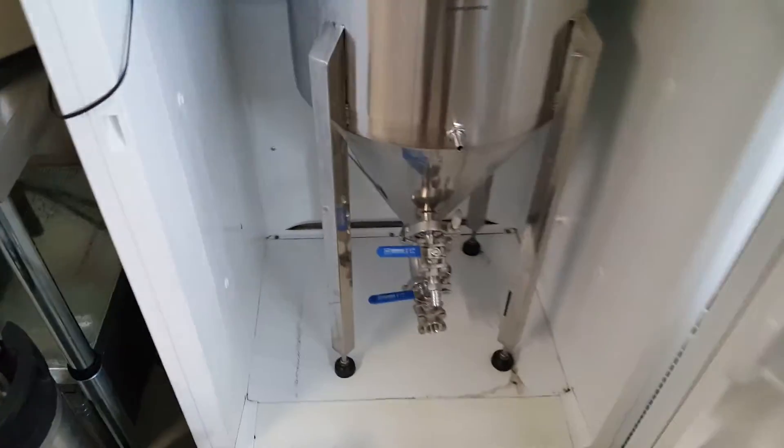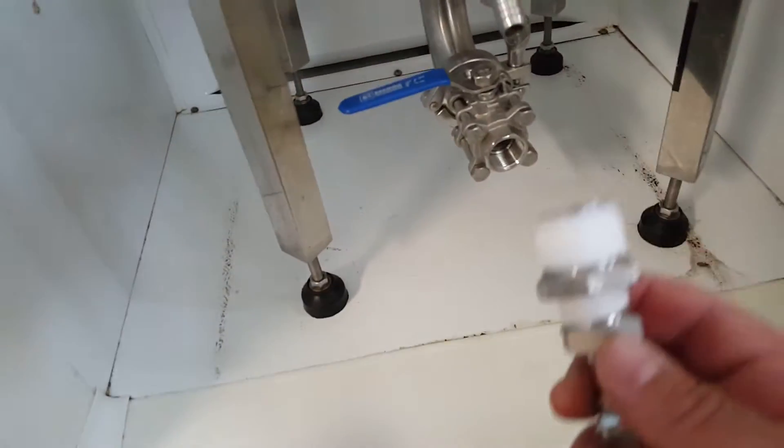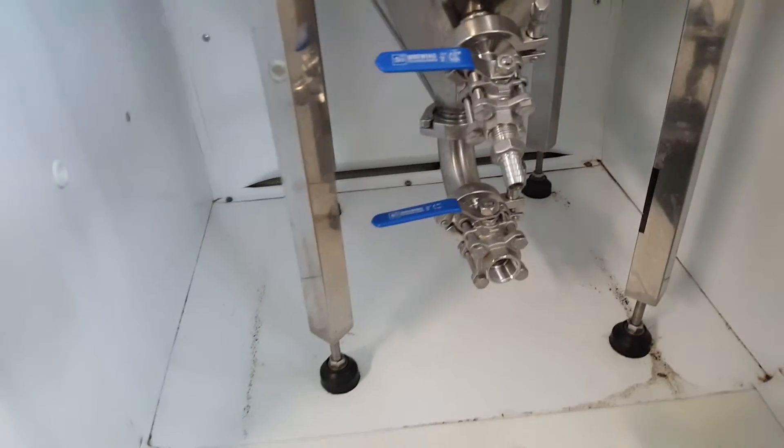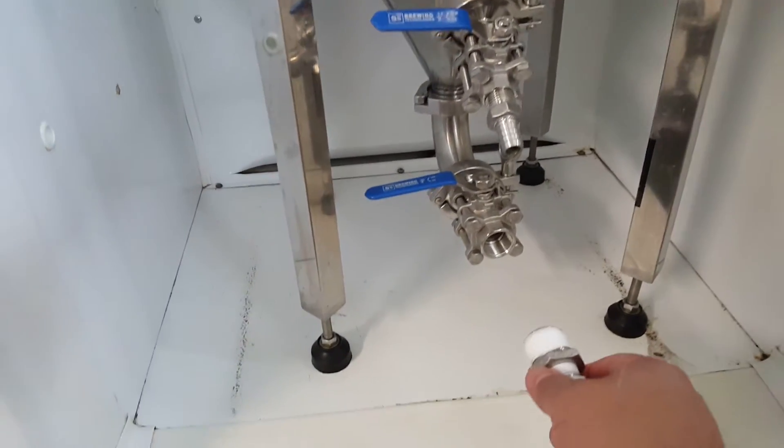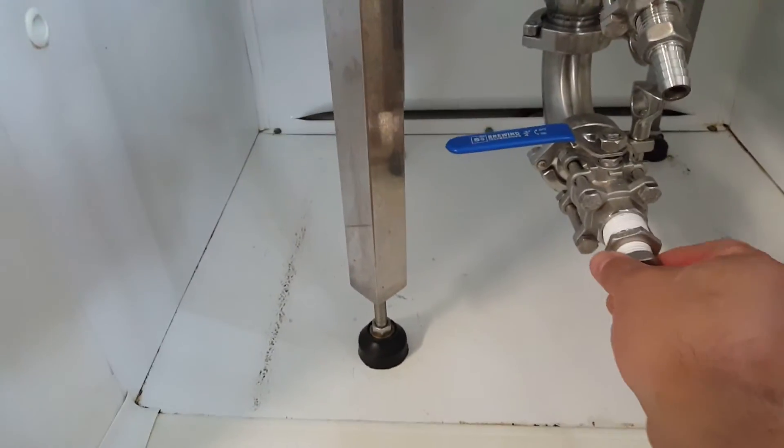So basically I have this 3 1/4 inch adapter, and this is the SS Brewtech - this is the 17 gallon half barrel. Basically I'm going to put it on the dump valve here, it's kind of screwed on kind of loose.